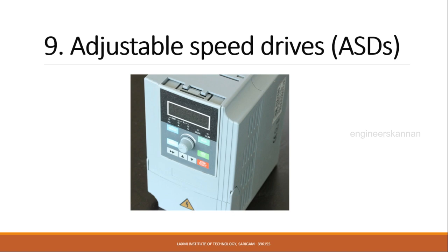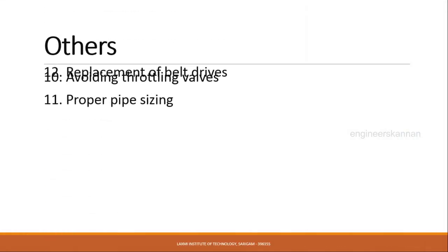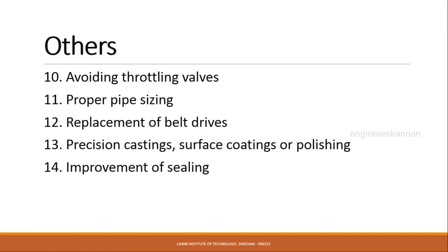There are certain miscellaneous items to discuss. First is avoiding the throttling valve and choosing the proper pipe size. Also, replacing the conventional belt drive with effective hub-mounted pumps and precision castings and coating of the surface or polishing to avoid corrosion and scaling problems. Also, improve the sealing to maintain the pressure.